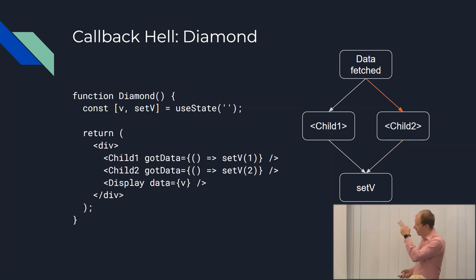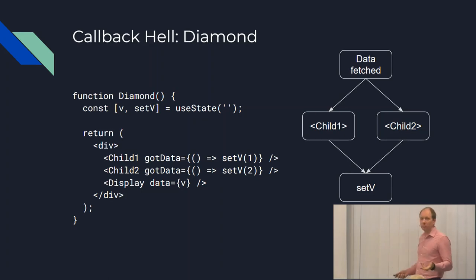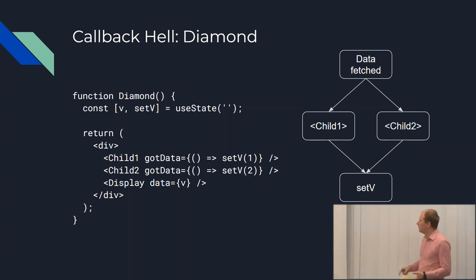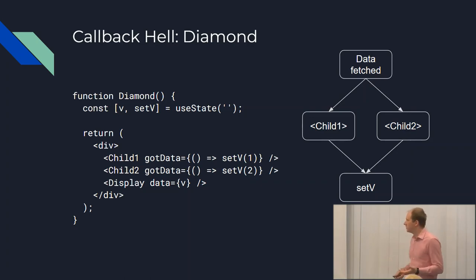Another thing the diamond pattern can cause is a performance problem: setV gets called twice, and what if setV then called another callback, and what if that had a diamond coming after it as well? Every callback diamond yields a doubling of the number of callback invocations, which is exponential growth you really can't put up with. React does a good job of helping you bottle these things up in a small context, which makes them more approachable, but fundamentally the problem remains.